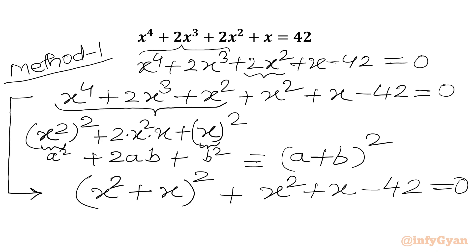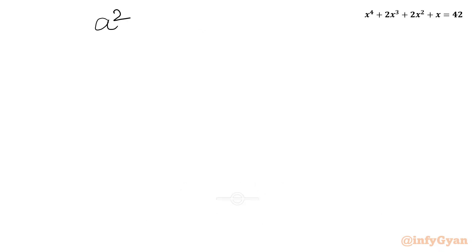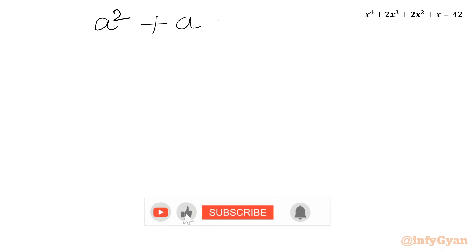This is now one quadratic equation in (x²+x). Let me consider x²+x = a. With this substitution, our equation becomes a² + a − 42 = 0.